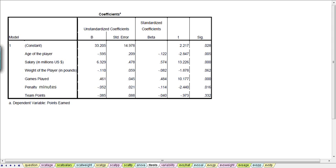So our regression equation would look like Y hat equals, we've got B0 given by the constant term here, so that's 33.205 plus B1. This is the coefficient for the age of the player which is our X1 variable, what we've called X1.